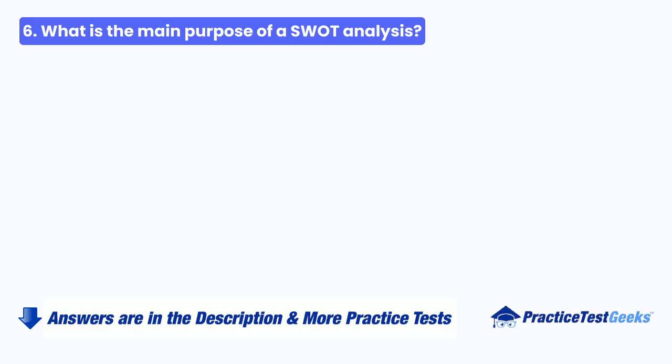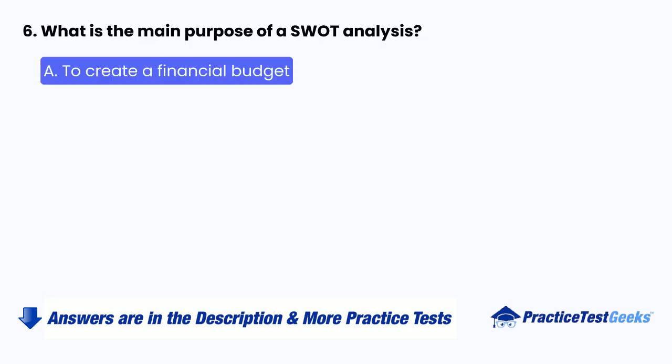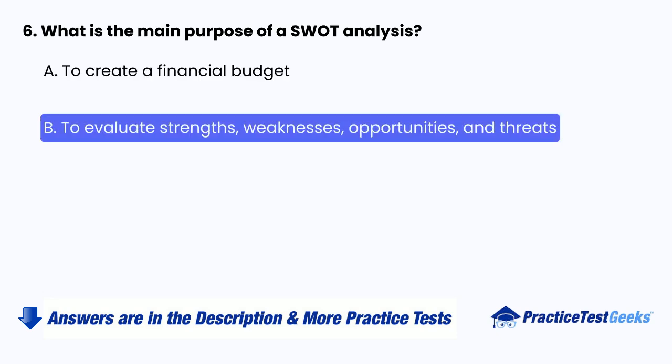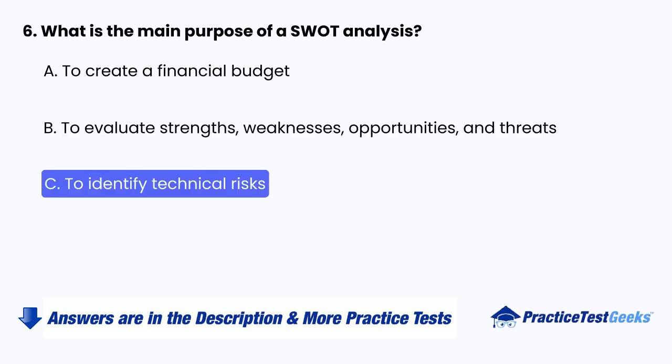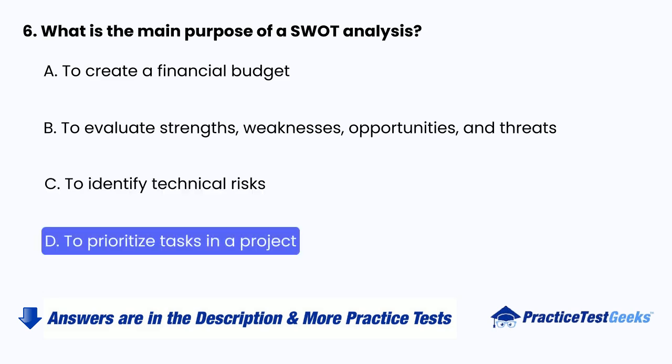Question 6: What is the main purpose of a SWOT analysis? A. To create a financial budget. B. To evaluate strengths, weaknesses, opportunities, and threats. C. To identify technical risks. D. To prioritize tasks in a project.